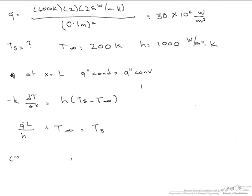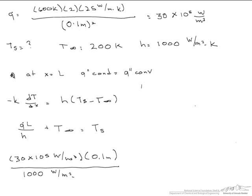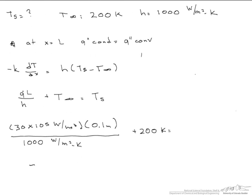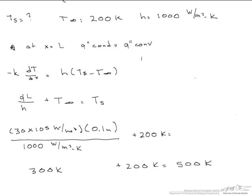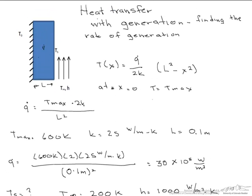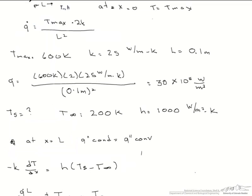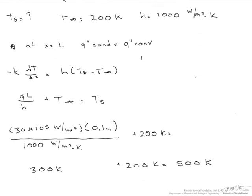Let's put in some numbers. This is the heat generation we found earlier, 30 times 10 to the fifth watts per meter cubed, and we multiply that by 0.1 meters, all divided by the convective heat transfer coefficient, 1,000 watts per meter squared K, added to 200K. Our surface temperature is equal to 300K plus 200K, or 500 Kelvin. Note that temperature had better be somewhere between our T max, which was 600K, and our bulk temperature, which is 200K. At 500K, this makes sense.